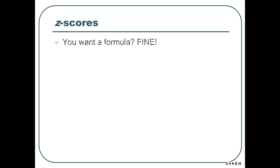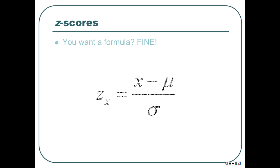If you want a formula, this will do everything we did last time in a slightly more structured way. The Z-score of a particular score is the observation's value minus the mean — X minus mean, not mean minus X — so that if your raw score is bigger than the mean, the result is positive, and if smaller, the result is negative. It's just a deviation from the mean divided by the standard deviation — the deviation from the mean turned into standard deviation units.